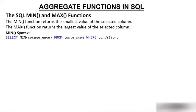If you apply minimum on salary, you will get the minimum salary of that column. If you apply minimum on name, you will get the alphabetically minimum name — a name that starts from 'A', something like that. The full syntax is: SELECT MIN(column_name) FROM table_name WHERE condition.